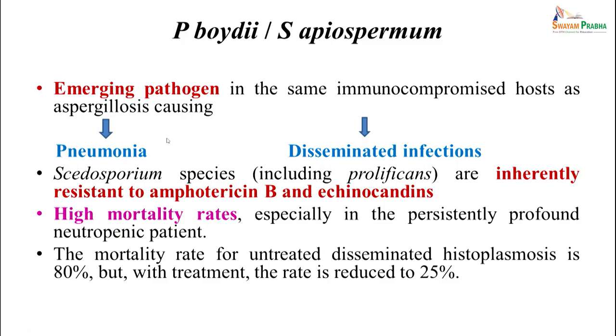Pseudallescheria boydii and Scedosporium apiospermum are emerging pathogens in immunocompromised hosts causing pneumonia and disseminated infections similar to aspergillosis. Importantly, P. boydii and S. apiospermum, especially the Scedosporium prolificans species, are inherently resistant to amphotericin B and echinocandins. Therefore, identifying these fungi is critical so the clinician can be advised not to use these ineffective drugs. Mortality rates can be up to 80% for untreated infections like histoplasmosis but can be reduced to less than 25% with prompt diagnosis and treatment.